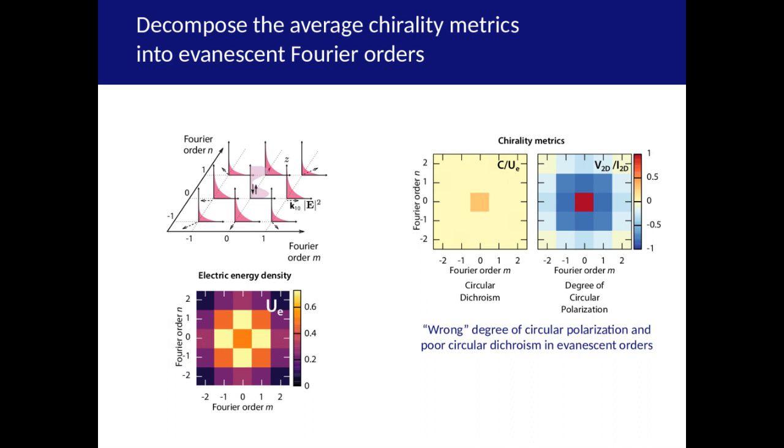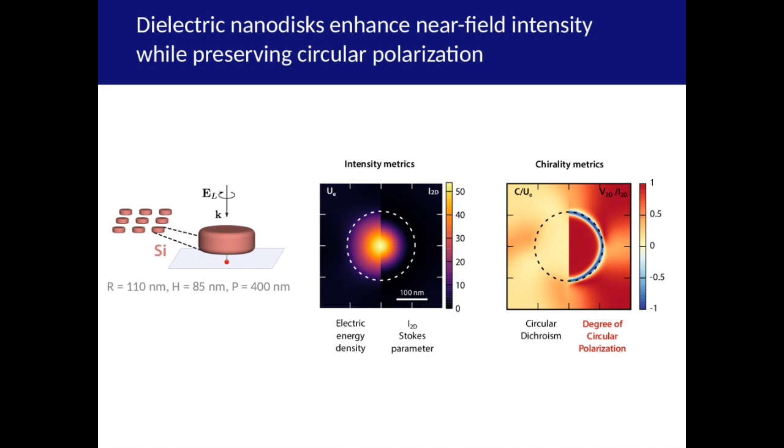So now that we know what the problem is, can we fix it? It turns out that the issue of wrong polarization of Fourier orders comes from the negative permittivity of silver and what Maxwell's boundary conditions do to the signs of the field components. So the solution is to move to positive permittivity dielectrics. Dielectric structures also allow more tunability due to the range of Mie resonances.